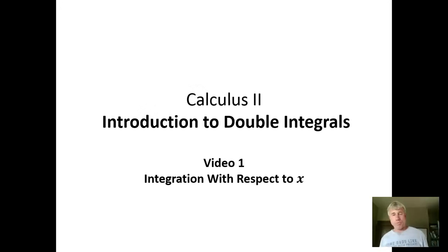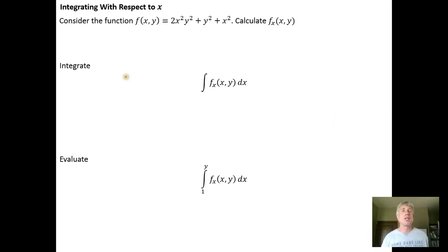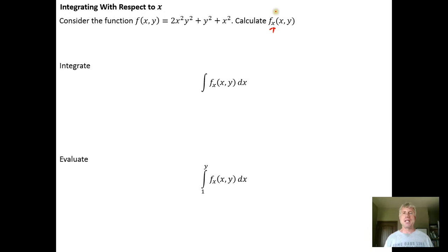In the previous set of homeworks, before the last exam, we focused on differentiation of multivariable functions. Now we're going to focus on integrating multivariable functions. We're going to start off with a simple example where we integrate with respect to x. Consider the function f(x,y) = 2x²y² + y² + x², and we're asked to calculate the partial derivative with respect to x, to see what happens when we integrate that partial derivative with respect to x.